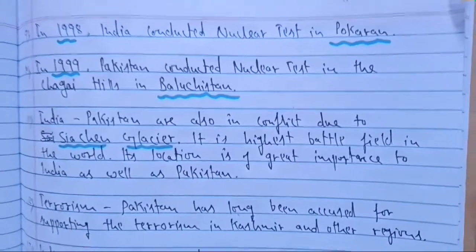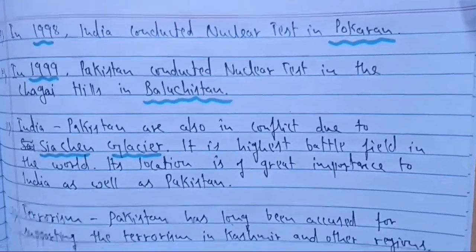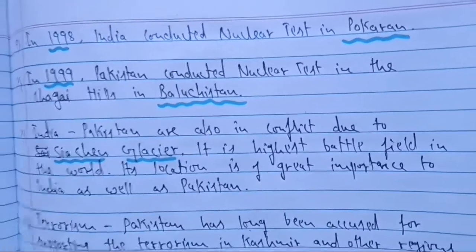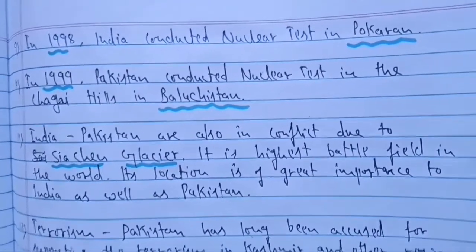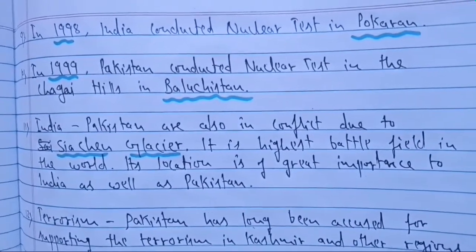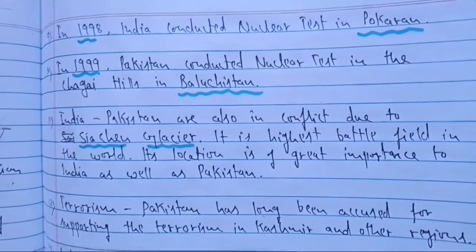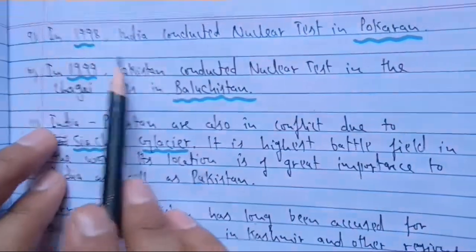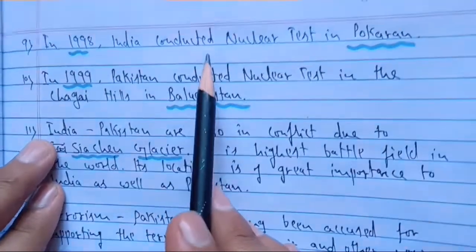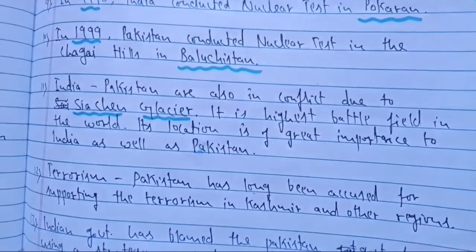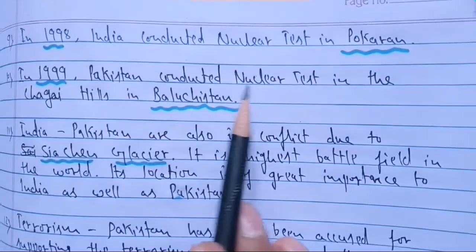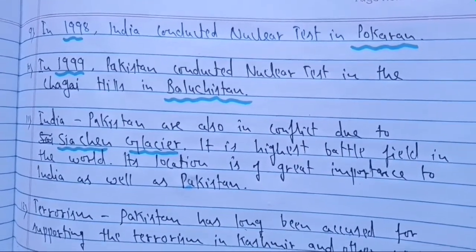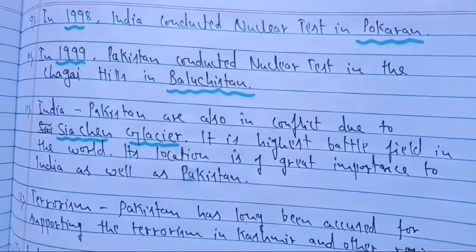We can easily say that since independence, there has always been conflict and tension between India and Pakistan relating to border areas of Jammu and Kashmir. Wars occurred in 1948, 1965, 1971, and 1999. In 1998, India conducted nuclear tests in Pokhran, becoming a nuclear power. In competition, Pakistan also conducted nuclear tests in Chagai Hills, Balochistan in 1999, wanting to be equal to India in terms of arms and ammunition.